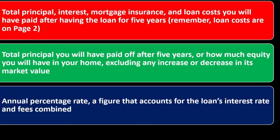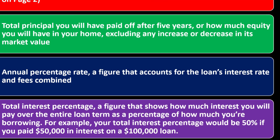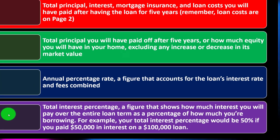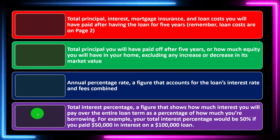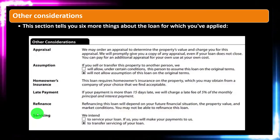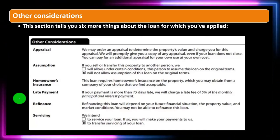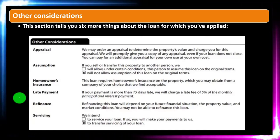To summarize the comparison metrics: the APR is a rate that accounts for the loan's interest rate and fees combined. The Total Interest Percentage shows how much interest you will pay over the entire loan term as a percentage of the amount borrowed. You might want to break the loan out in more detail with an amortization table to get a clearer picture of the true cost.